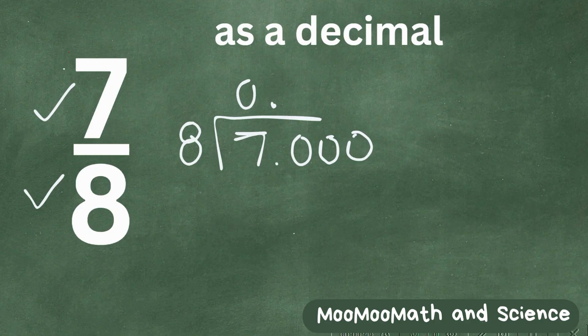And 8 goes into 70. It doesn't go even, but if you multiply 8 by 8, 8 times 8, that will give you 64. Now when you subtract 70 minus 64 is 6.